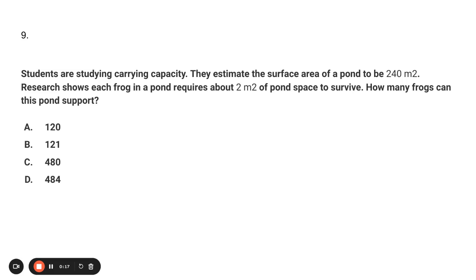Students are studying carrying capacity. They estimate the surface area of a pond to be 240 meters square. Research shows each frog in a pond requires about two meters square of pond space to survive. How many frogs can this pond support?